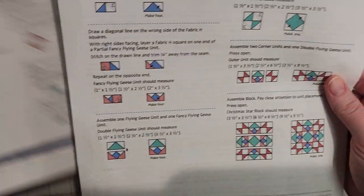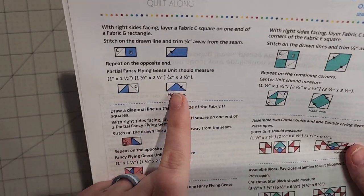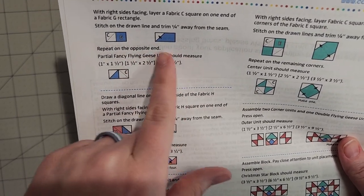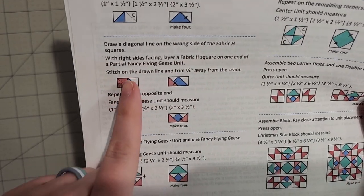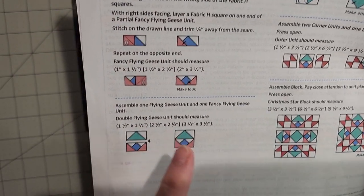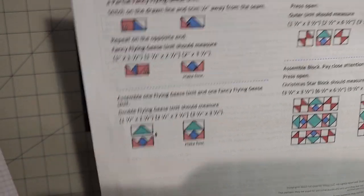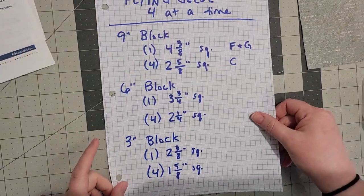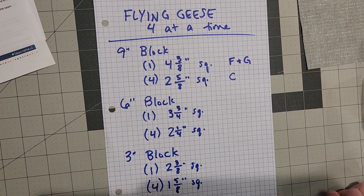At this step you can do four at a time flying geese to get your four of these and then you do have to do the quarter squares with that additional fabric to get the ultimate unit looking like this. So that's two sets of four at a time flying geese and here are the cutting instructions if you would like to do that for your blocks.